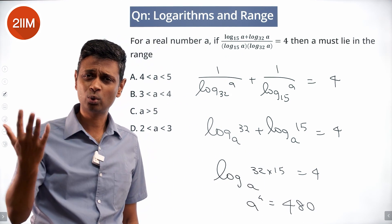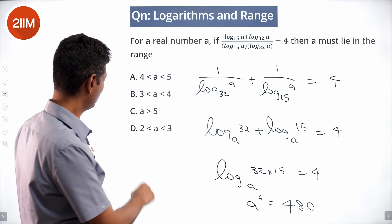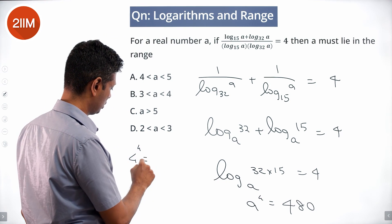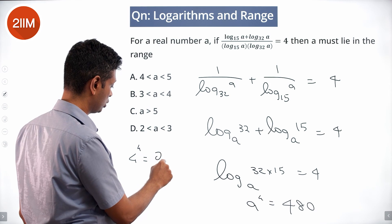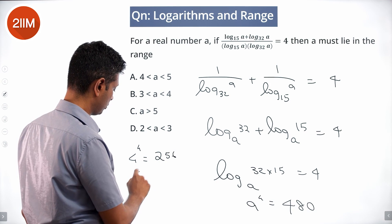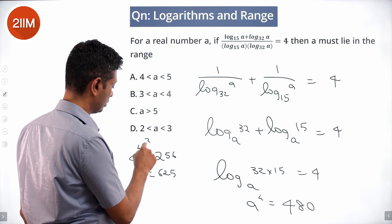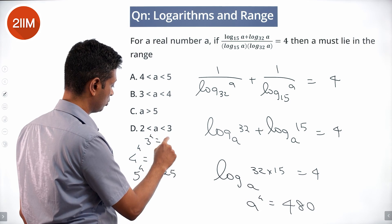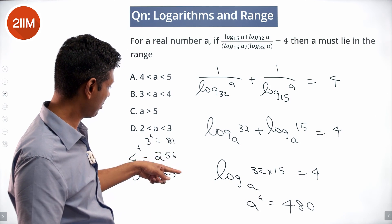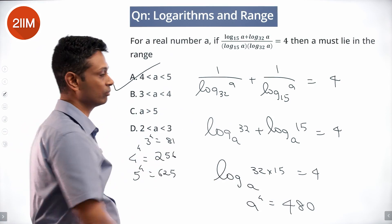A is the 4th root of 480. Since 4^4 = 256 and 5^4 = 625, and 480 lies between 256 and 625, A lies between 4 and 5.